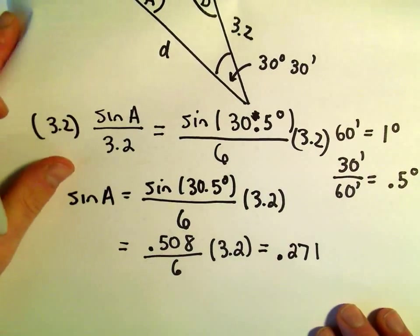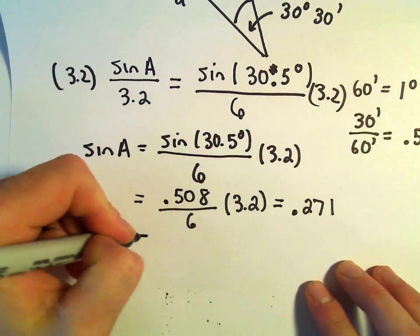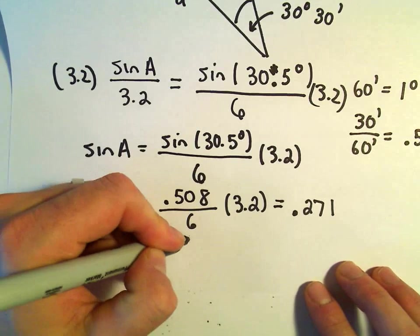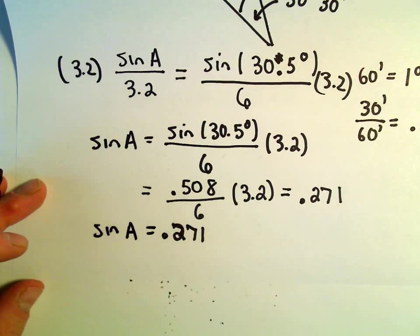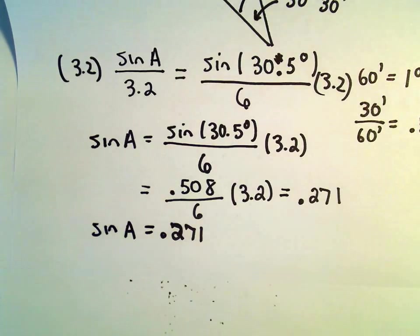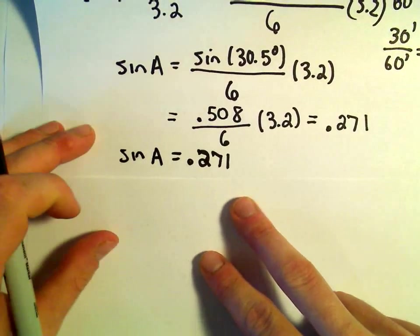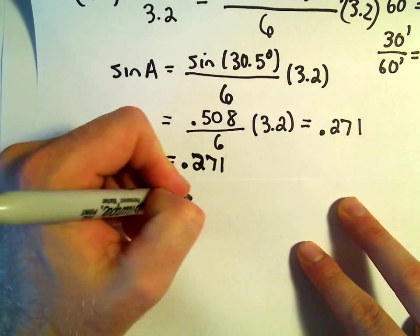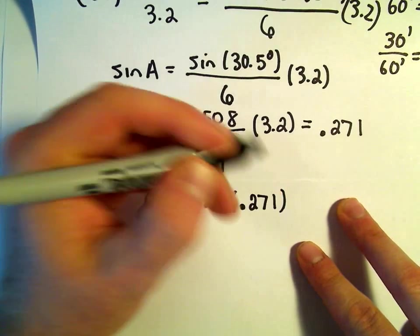So now we have sine of A. Sine of A equals .271. So we'll just take the inverse sine of both sides. We'll just simply get that A equals the inverse sine of .271.